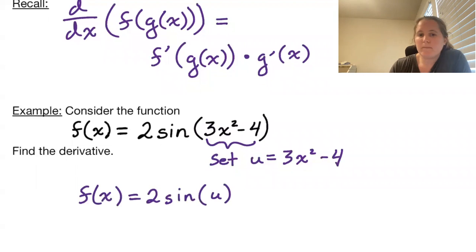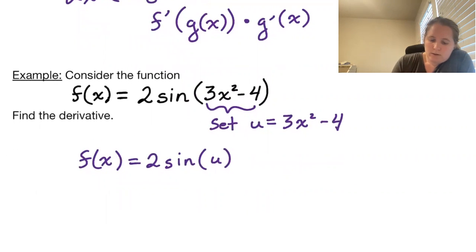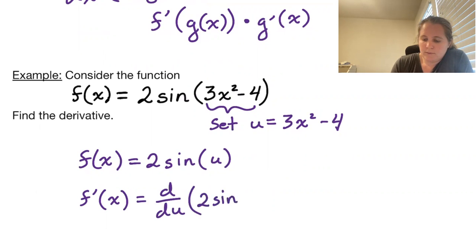So we have that f prime of x is equal to the derivative with respect to u of 2 sine of u, multiplied by the derivative of u with respect to x.